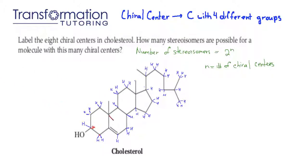We will continue to this carbon. This carbon does not have any hydrogen. However it has one carbon here, a carbon, a carbon, and a carbon. The carbon on the very top is not connected to any carbon, therefore it's different from the rest. The carbon on the bottom is connected to a double bond, which is also different from the rest. The carbon on the left is connected to only one carbon here, and the carbon on the right is connected to two carbons. Therefore all of the connections are different and this is a chiral center also. We will put an asterisk next to it as well.